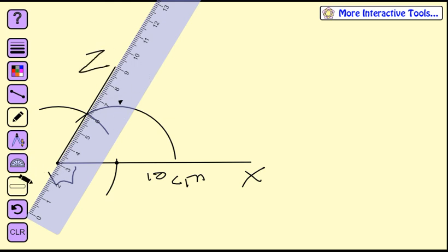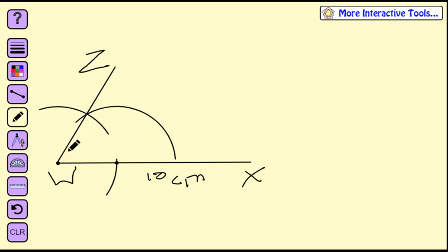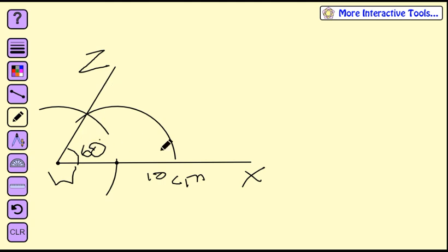This is a parallelogram, so it's pretty much a slanted rectangle. We did angle ZWX at 60 degrees, and now we want to find a point A that lies on ZY.